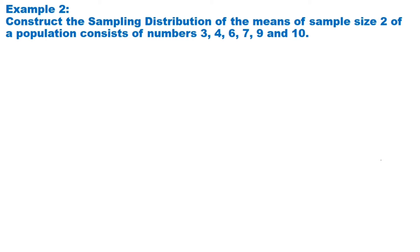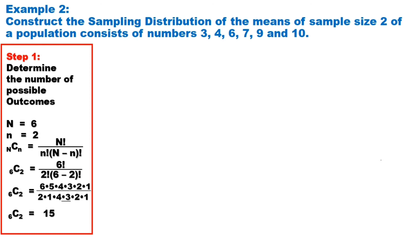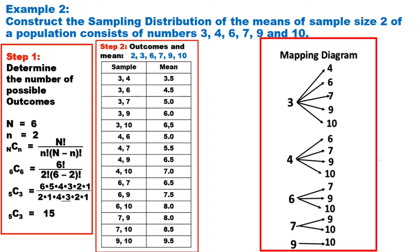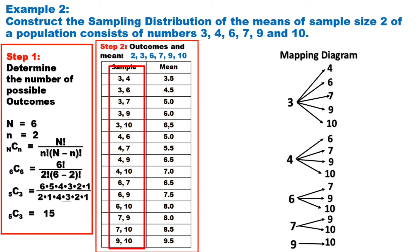For another example, construct the sampling distribution of the means of sample size 2 of a population consisting of numbers 3, 4, 6, 7, 9, and 10. For step 1, determine the number of possible outcomes. Using the formula, we arrive at 15 possible outcomes of sample size 2. Step 2 is listing the 15 samples and computing each mean. We have two possible ways: a mapping diagram or systematic listing. The first sample is 3 and 4 with mean 3.5, the second sample is 3 and 6 with mean 4.5, and the 15th sample is 9 and 10 with mean 9.5.